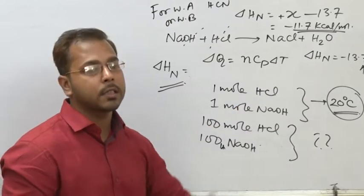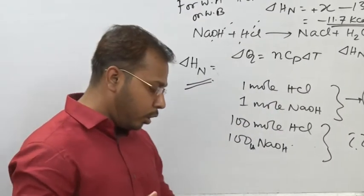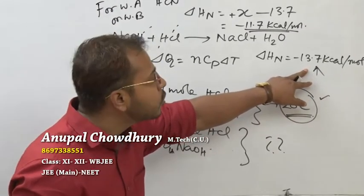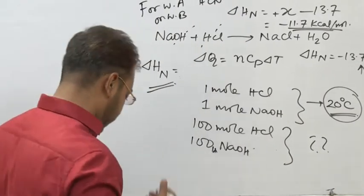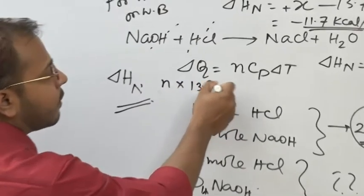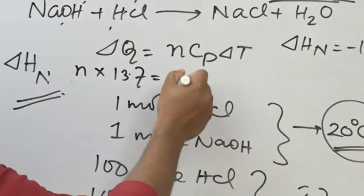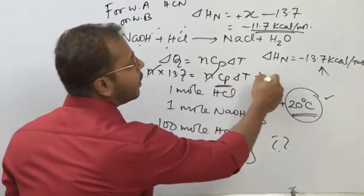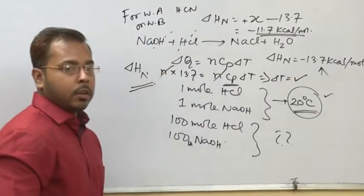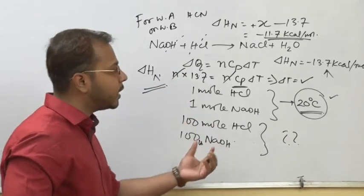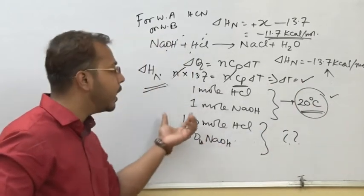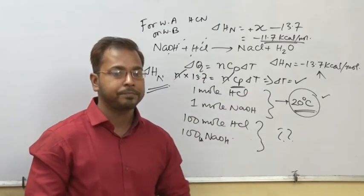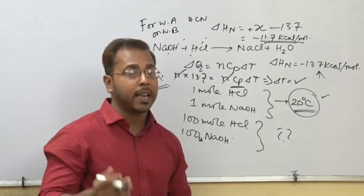For 1 mole neutralization, ΔQ = minus 13.7 kcal/mol. For n moles, ΔQ = n × 13.7, and this equals n × Cp × ΔT. The n on both sides cancels out, and since Cp is constant, the temperature rise is also the same. Therefore, whether 1 mole or 100 moles of HCl and NaOH are mixed, the temperature rise is the same — 20°C.